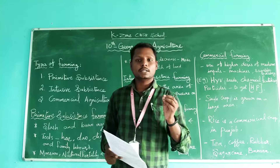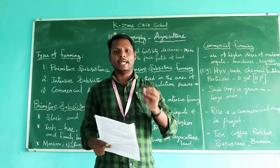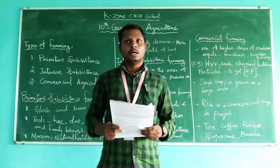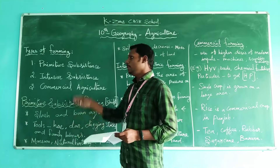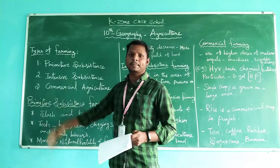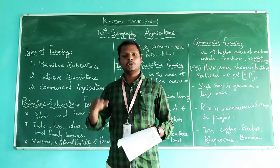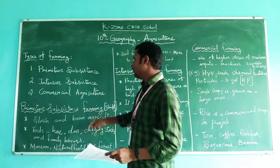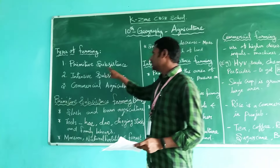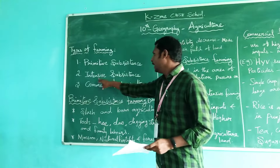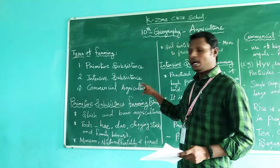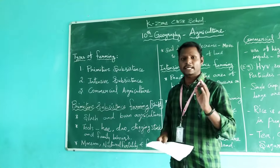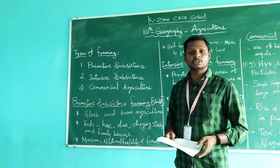Totally two thirds of people are engaged with agricultural activities in our country. In agriculture they are following different kinds of farming methods. In this class we are going to discuss three types of farming methods: first, primitive subsistence farming; second, intensive subsistence farming; and third, commercial agriculture.